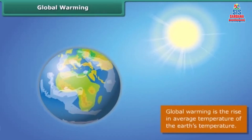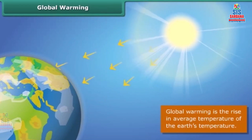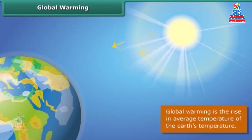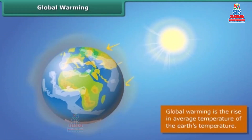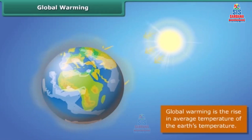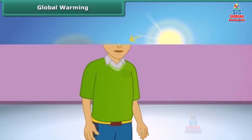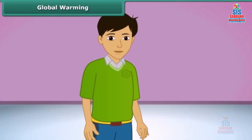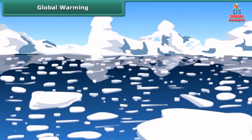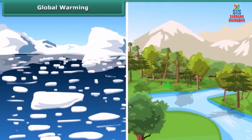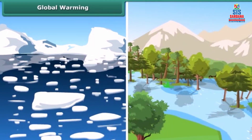Global warming means the Earth is heating up. Scientists believe that Earth's temperature is going to increase even more in coming years. Greenhouse gases like carbon dioxide trap heat from the sun and increase the temperature of Earth's atmosphere. This will melt the ice at the poles, causing sea levels to rise, which could flood low-lying areas and affect the habitats of plants, animals, and people.